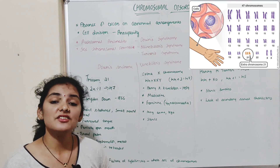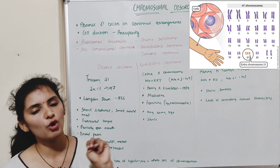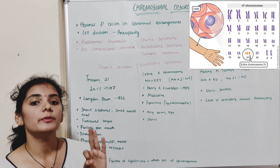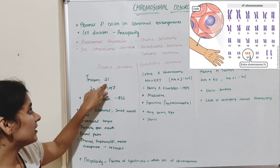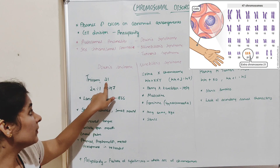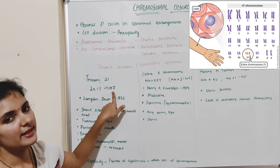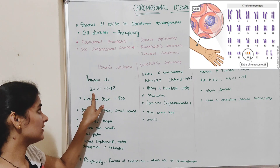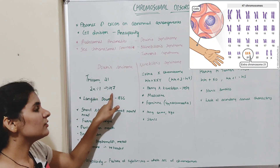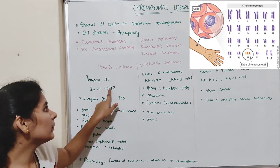In an individual with Down syndrome, there is an extra or additional chromosome at the 21st chromosome. Normally the 21st chromosome has two copies, but in this individual it has three copies — so it is called trisomy 21. Because of this extra chromosome, this individual will have 47 chromosomes instead of the normal 46, expressed as 2N = 46 + 1 = 47.